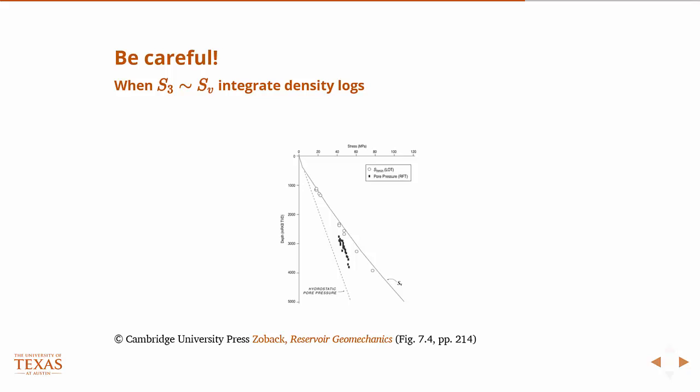So this plot actually shows that the white values are several S3 measurements from leak-off tests, and one thing to notice is that they are pretty consistent. So if you look up here in this region, they're not wildly scattered. They're pretty consistent.